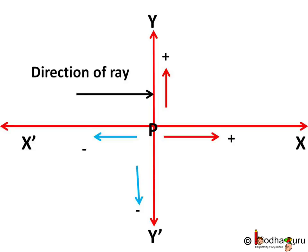That is, anything measured on the left of the pole P is negative and anything on the right of the pole P is positive. Same way, if any length is measured upward from the principal axis, it gets a positive sign.